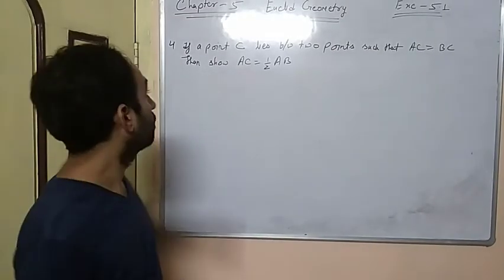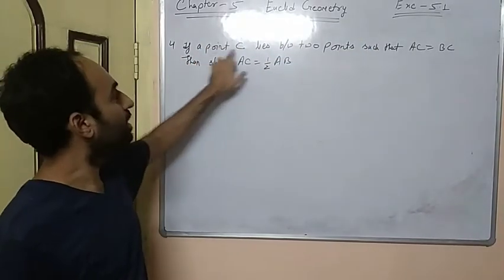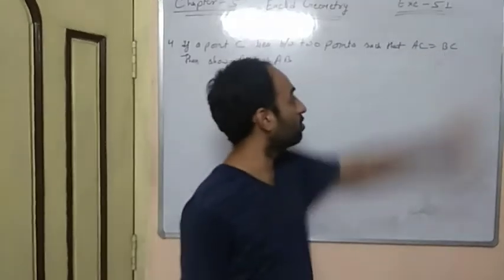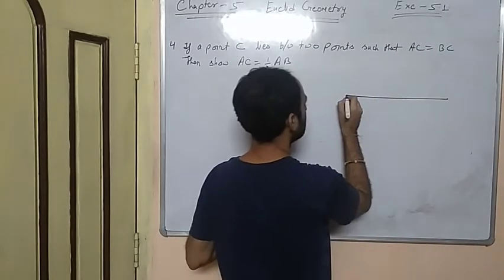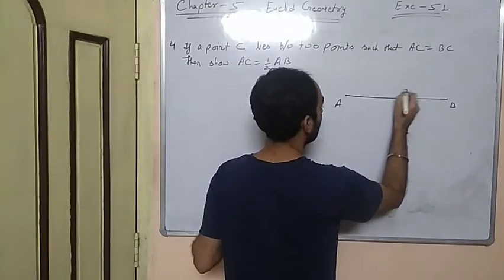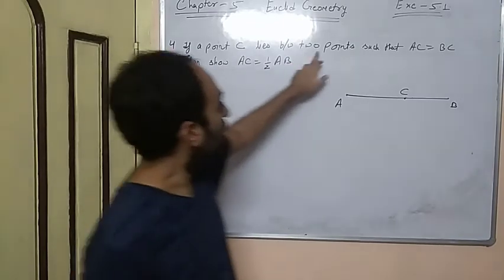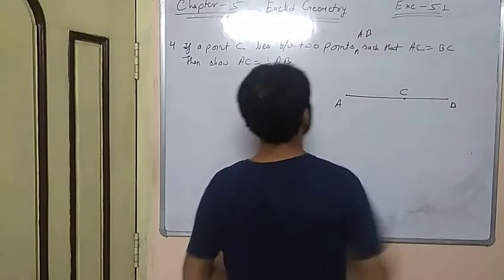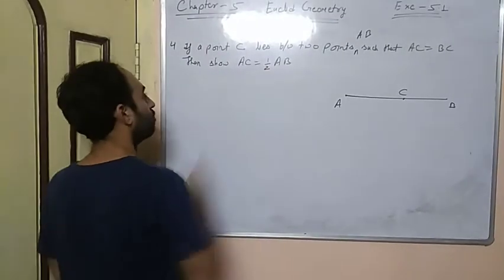Hello students, how are you all? Now we are going to discuss Chapter 5, Euclid Geometry, Exercise 5.1, Question number 4. If a point C lies between two points A and B such that AC is equals to BC, it means C is the midpoint of AB. Then show that AC equals to 1 by 2 of AB.